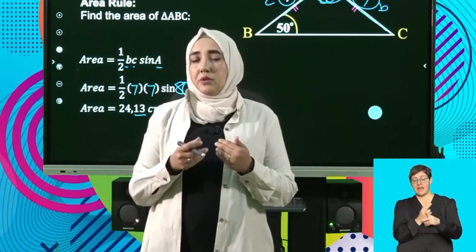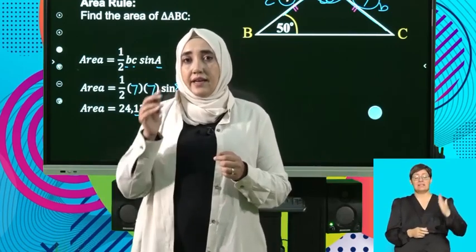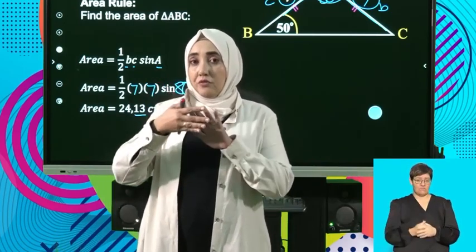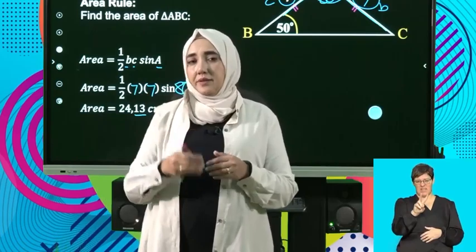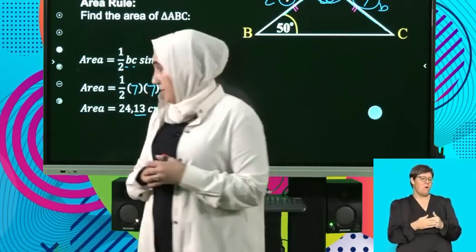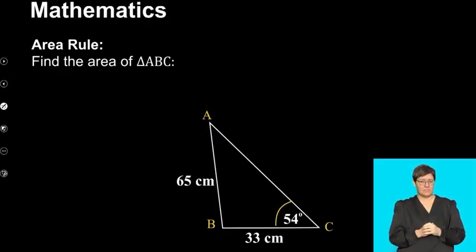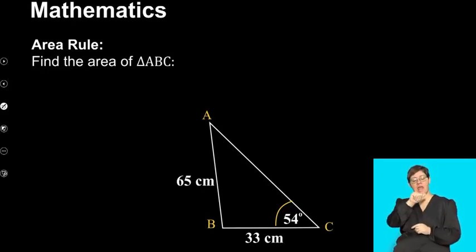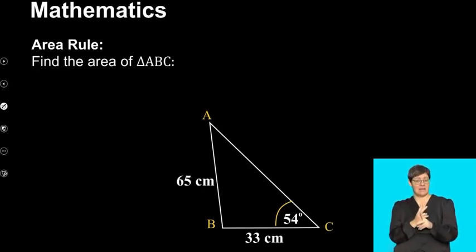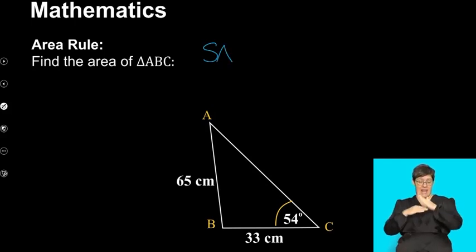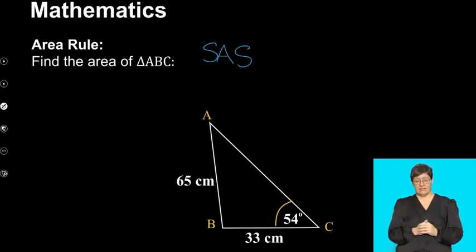Remember when we're dealing with area rule, we want to find side, angle, side — and we're kind of looking for a V pattern. Let's try one more example. Here they're asking us to find the area of triangle ABC. Again, remember for area rule, what do we need? We need to have side, angle, side.